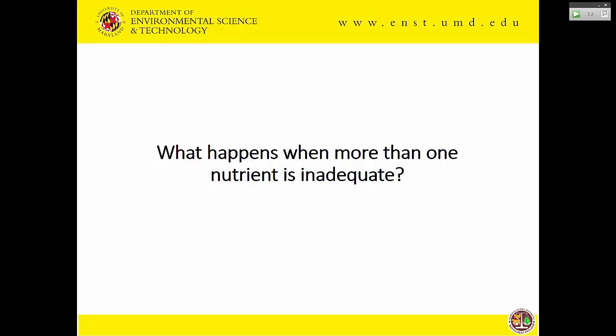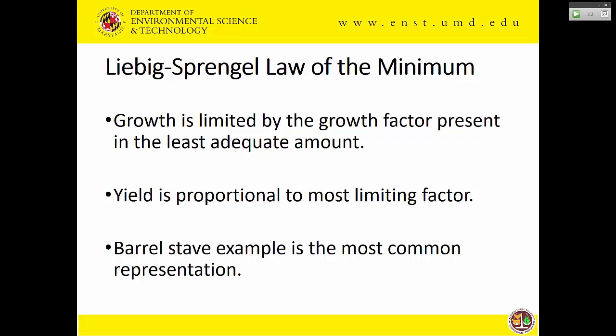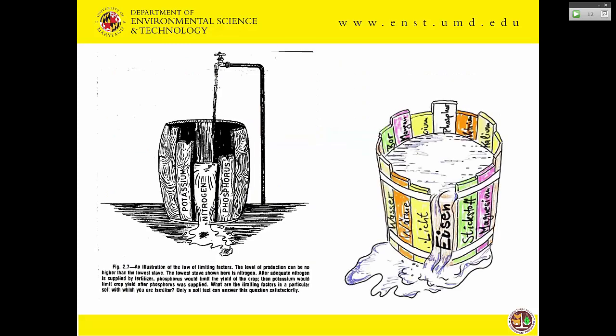What happens when more than one nutrient is inadequate? Liebig's law of the minimum — now called the Liebig-Sprengel law of the minimum, since Liebig essentially took credit for Sprengel's work — states that growth is limited by the growth factor present in the least adequate amount, and yield is proportional to that most limiting factor. Like a barrel with staves of different heights, if you have adequate amounts of everything else but inadequate nitrogen, your growth is limited by nitrogen. If you then raise nitrogen to optimum but still have inadequate phosphorus, phosphorus will limit things.